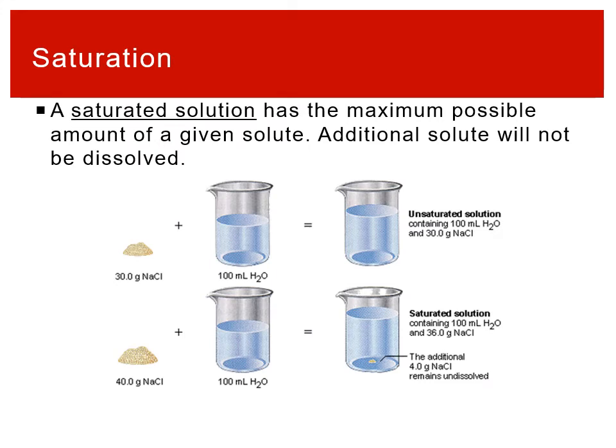When we define solubility we normally think of it as a binary — something either is or isn't soluble — but there's a lot more nuance to it than that. A saturated solution is a solution that has the maximum possible amount of a given solute. For example, salt: we've all dissolved salt in water, and there's a bunch of salt dissolved in seawater.